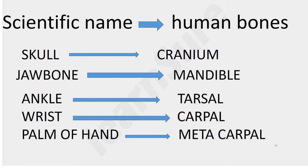Let us start. The first scientific name — we call it cranium. Cranium is the scientific name of the skull. Jaw bone: the scientific name is mandible. Mandible is the only bone of the skull that we can move.